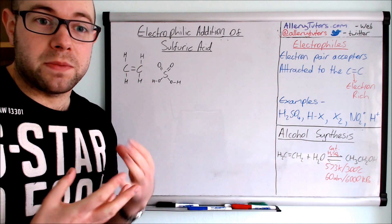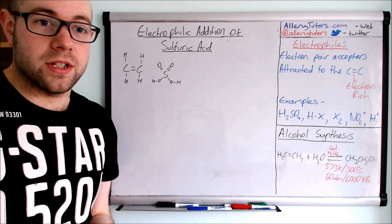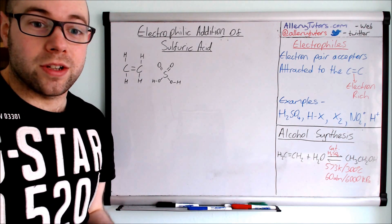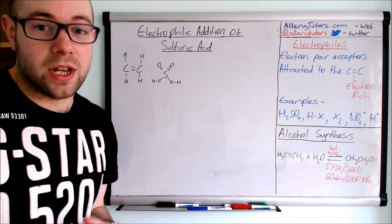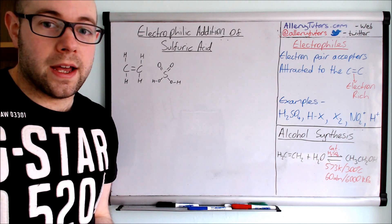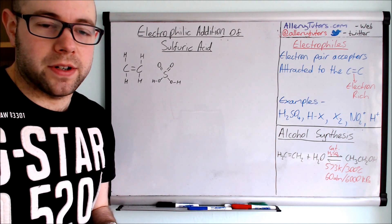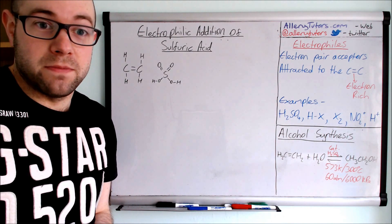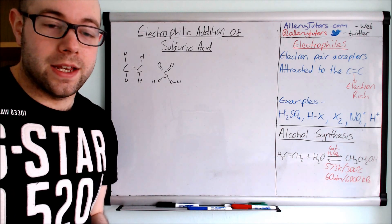The reason why is because this double bond has got loads of electrons, it's electron rich. And so to an electrophile which is electron deficient and wants to accept a pair of electrons, then it is more than happy to go and attack this double bond.